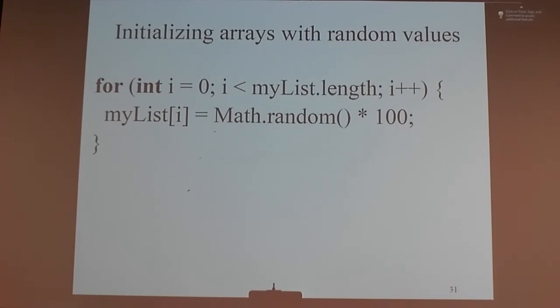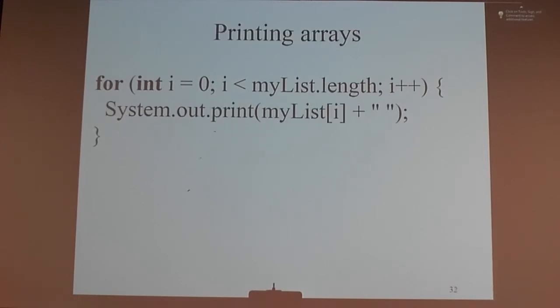How do you print the values of an array? Again, you write a for loop like this. And we basically say system dot out dot print or printf. And we say myList i with a space. So it'll print all the 10 values for you. With printf, the advantage is that you can control the formatting. With print or print line, you cannot.